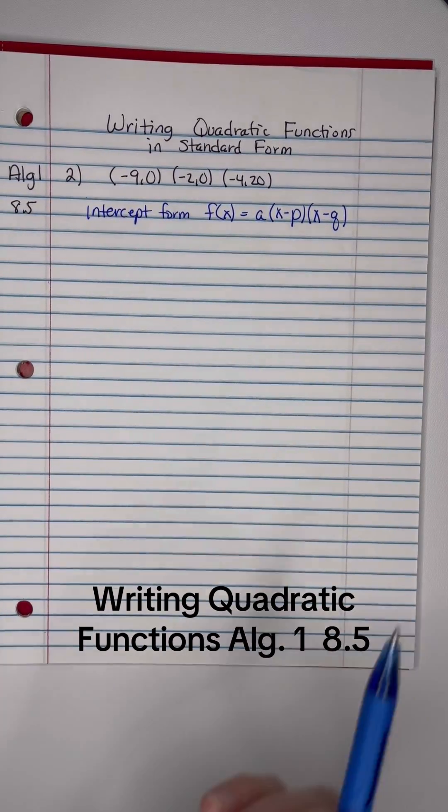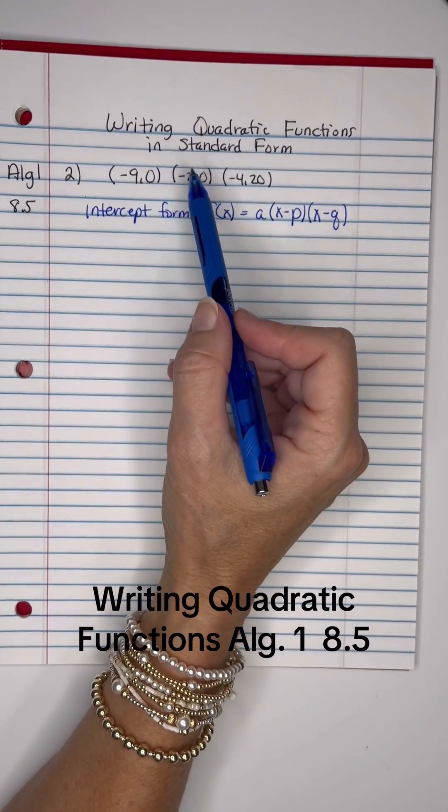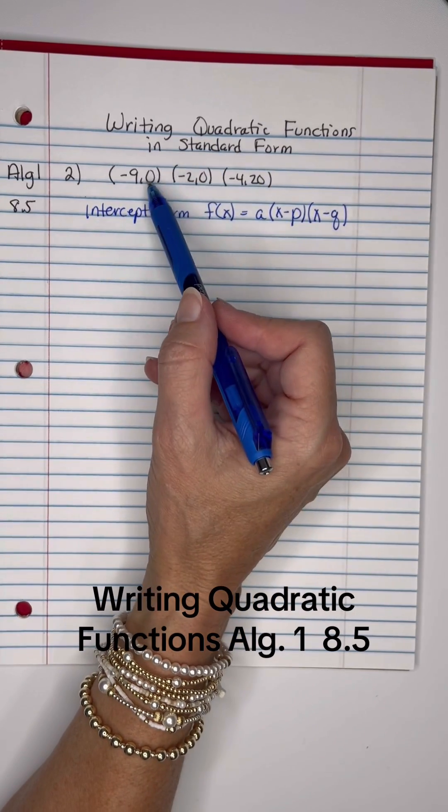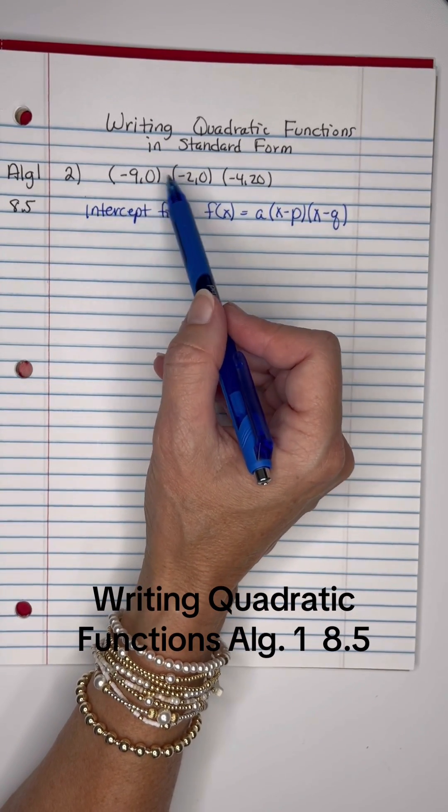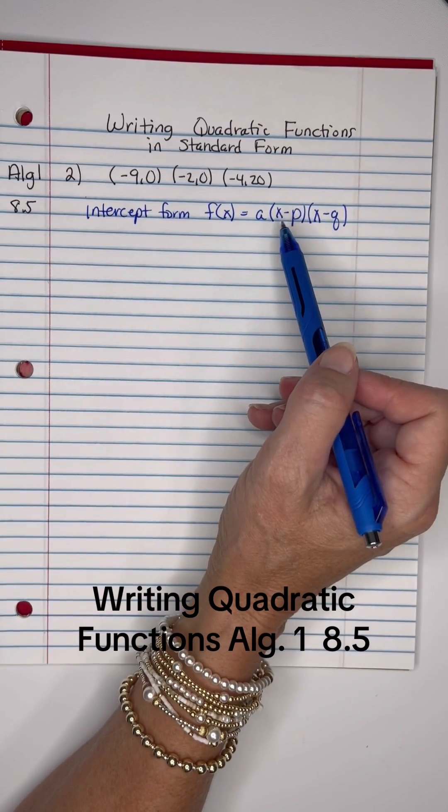Okay, this time we're going to write a quadratic function in standard form. We're given three ordered pairs, and notice that the y's are 0, so these would be the x-intercepts, and we're going to use the x-intercept formula.